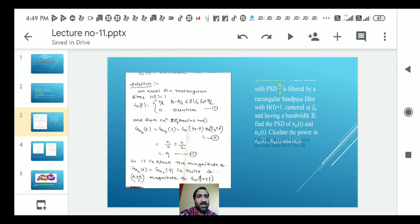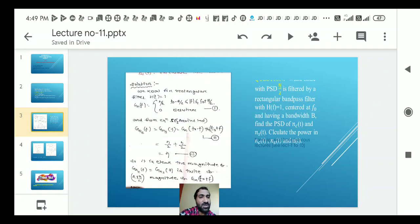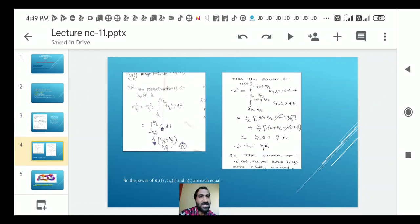In the next slide we see the power variance of NCT. Power variance sigma nc squared equals the integral from minus b by 2 to b by 2 of gnc(t) df. The value of gnc(t) from the previous slide equation 3 is eta.